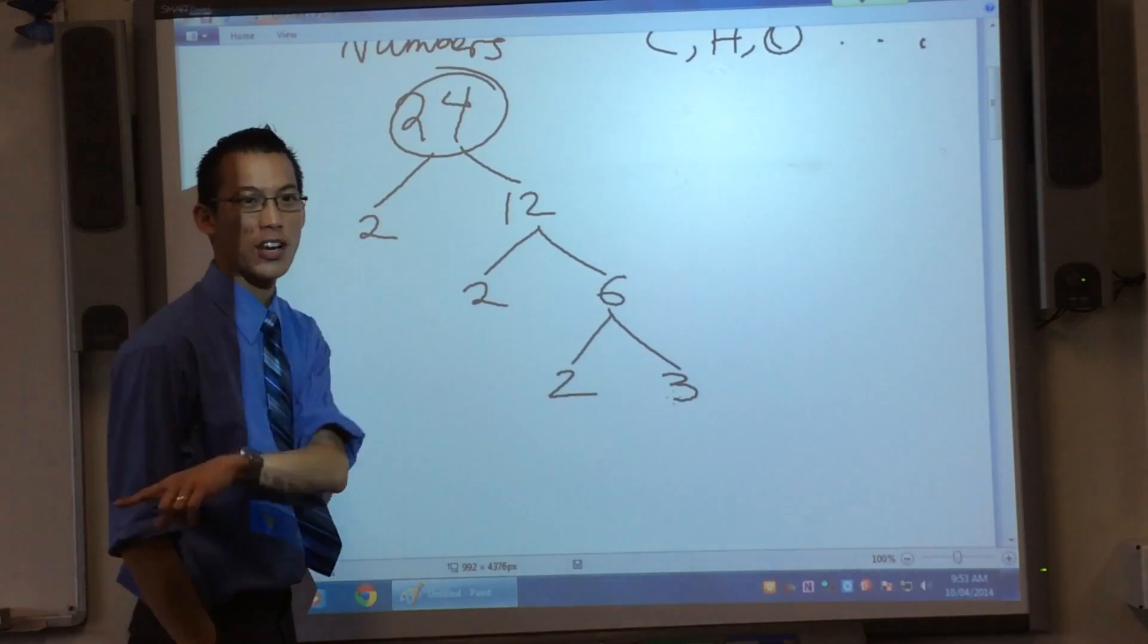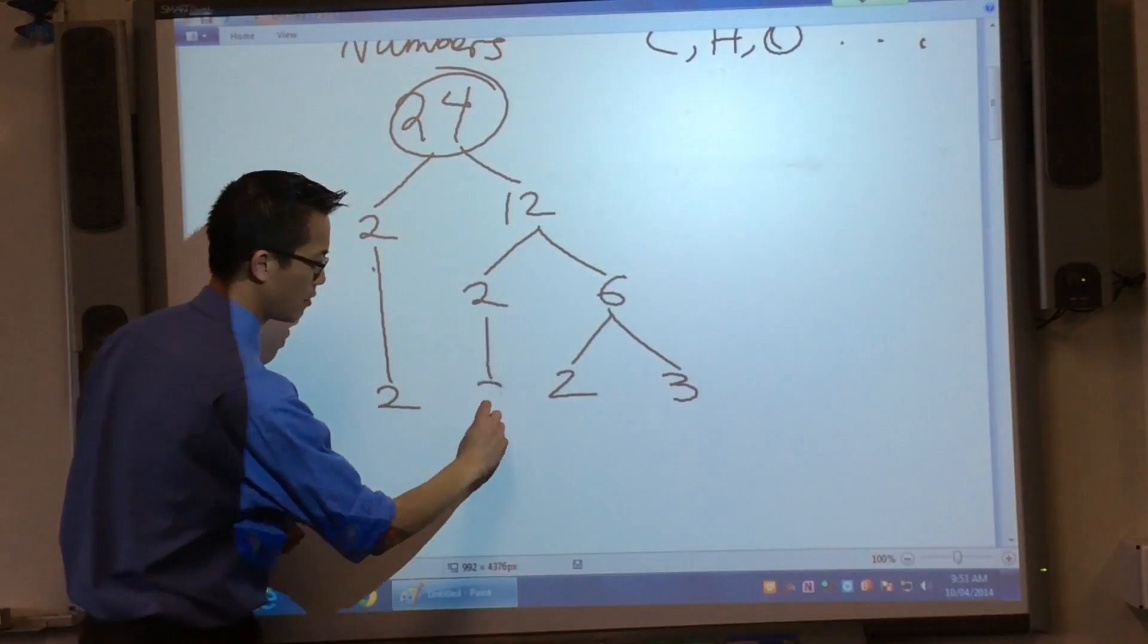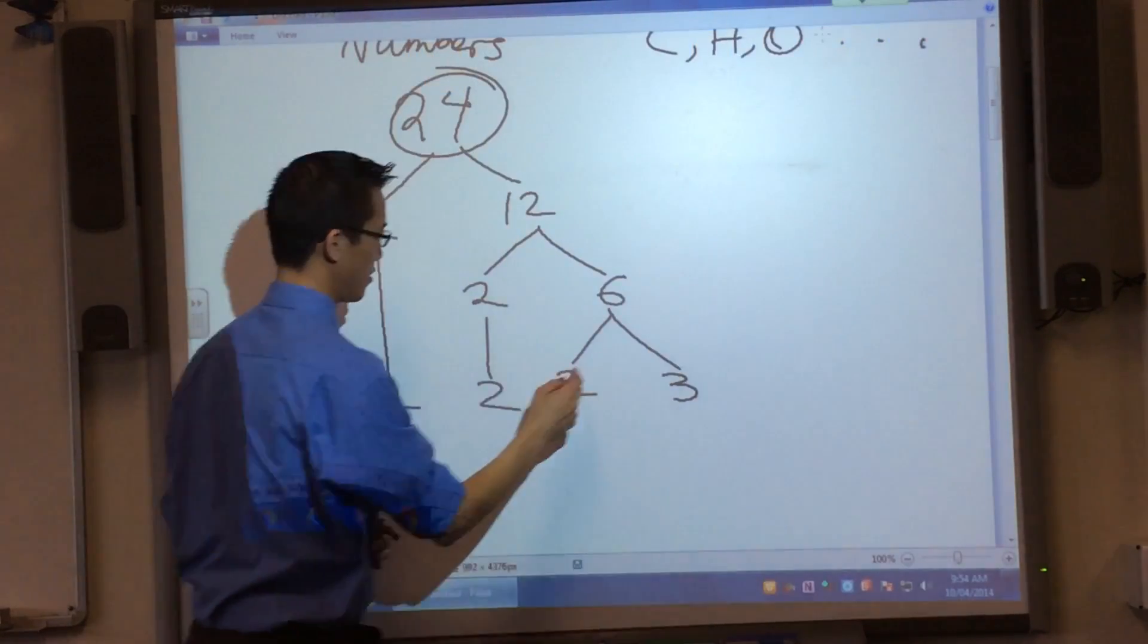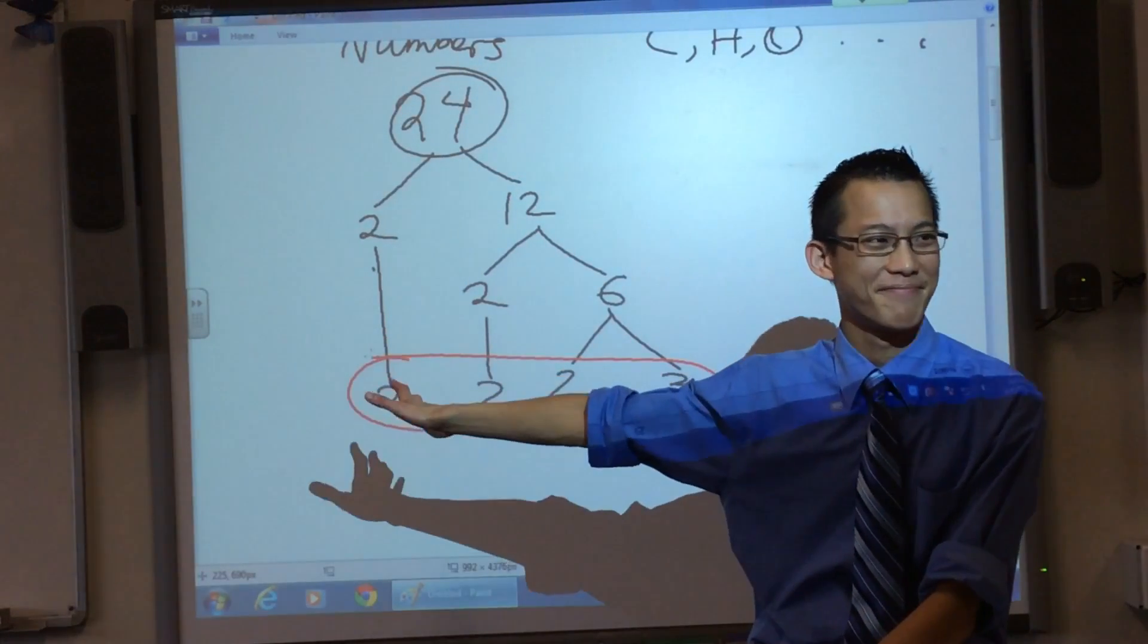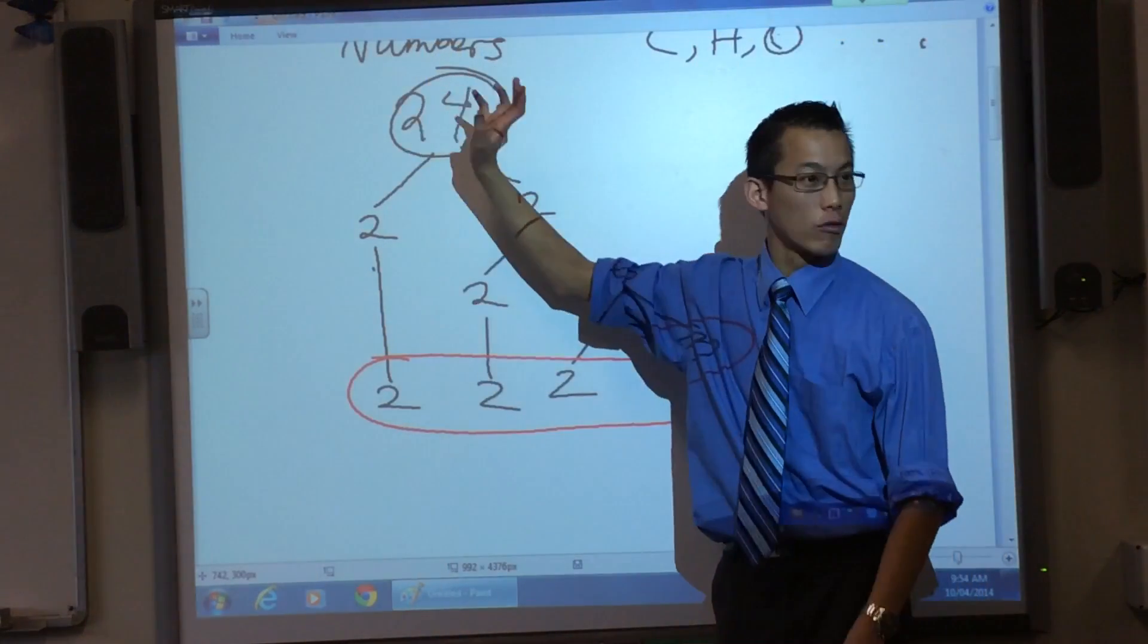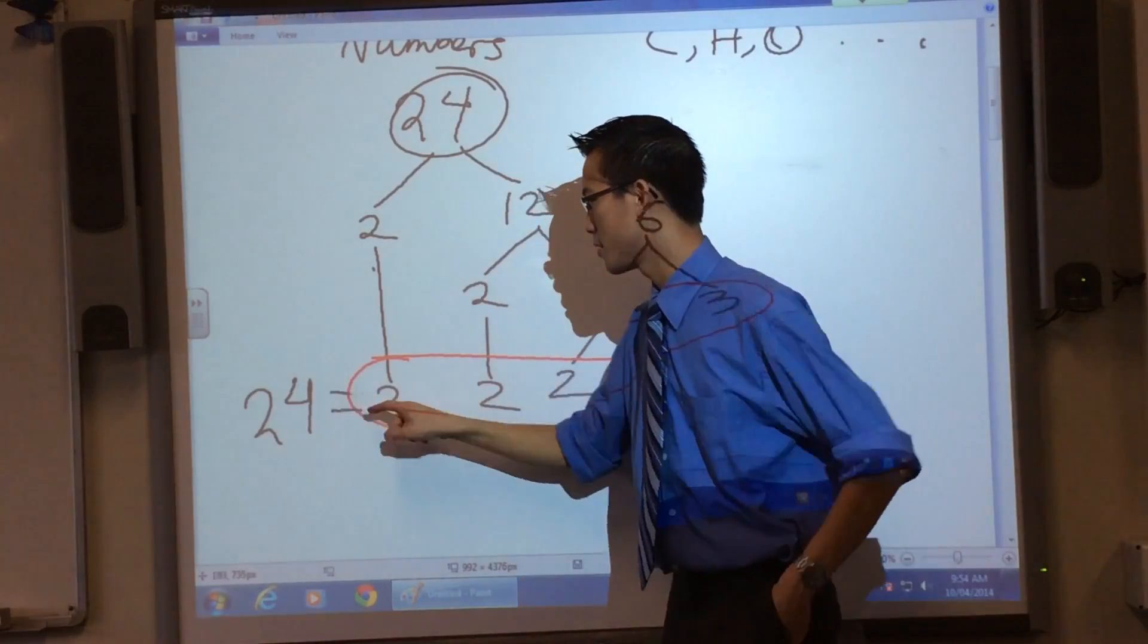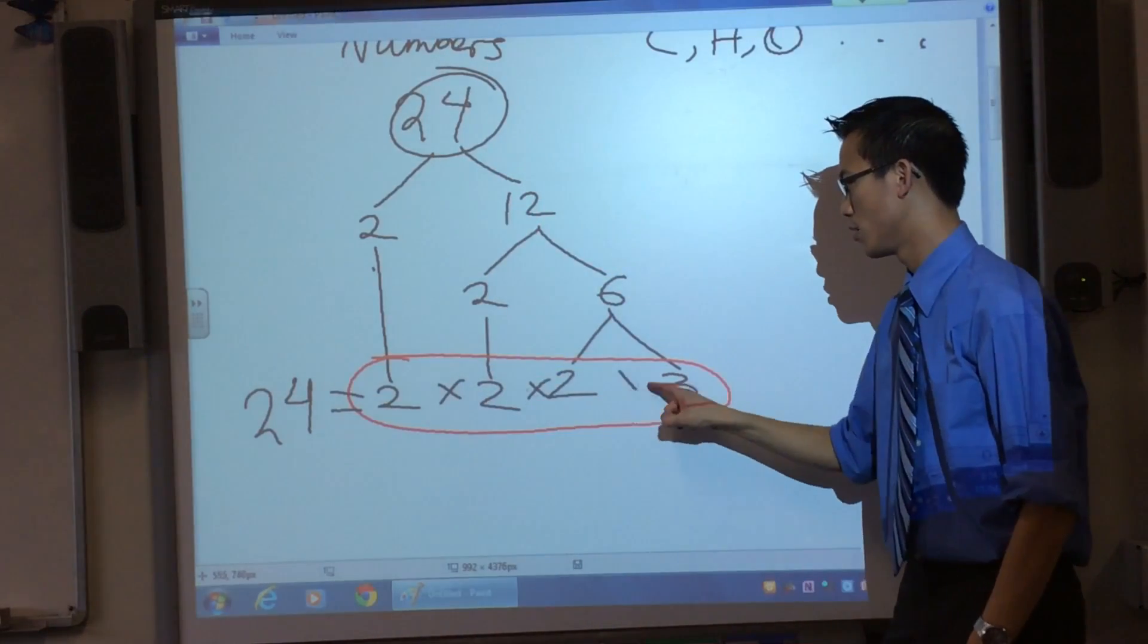So as Rishabh suggested before, I'm going to bring this 2 down to the bottom. And this 2 down. Now we're done. So what does it mean? This means that we can write 24 as this here. 2 times 2 times 2 times 3.